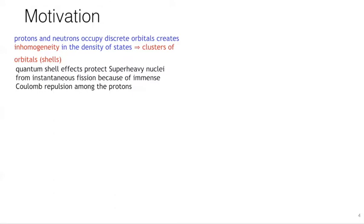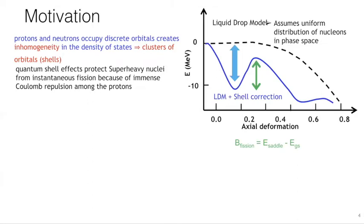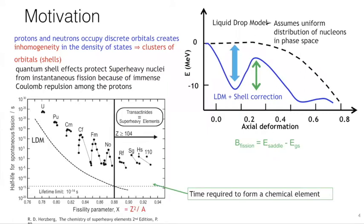This quantum shell effect actually protects the super-heavy nuclei from instantaneous fission, otherwise they would fission because of the immense Coulomb repulsion among the protons. This can be understood if we look at the potential energy surface as a function of deformation. In the liquid drop model, which assumes uniform distribution of nucleons in phase space, the potential surface is quite flat. When the shell correction is taken into account, there is a clear depression in the potential energy surface, providing the nuclei stability against spontaneous fission.